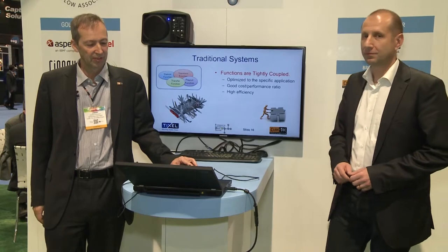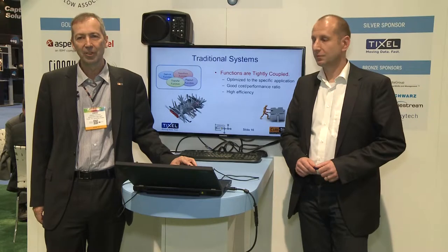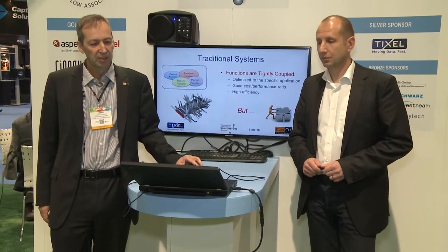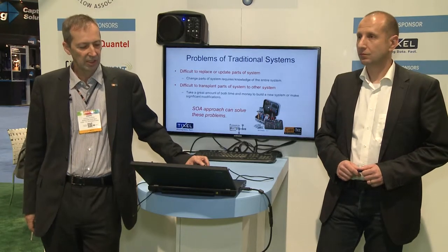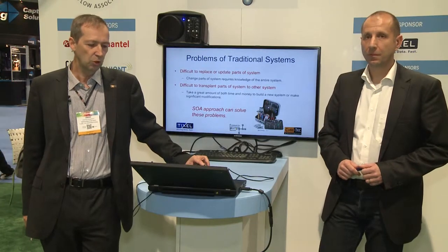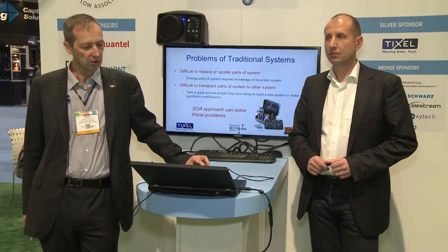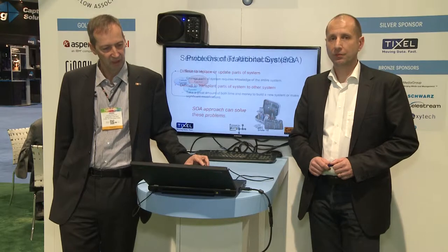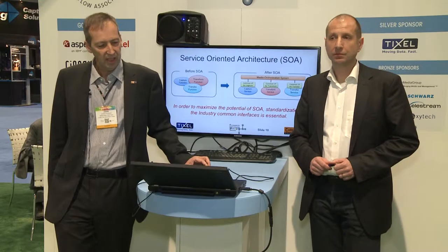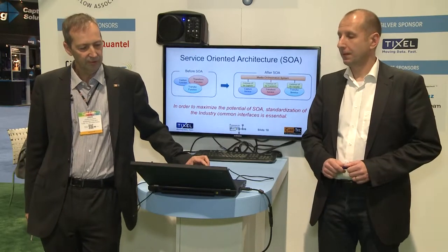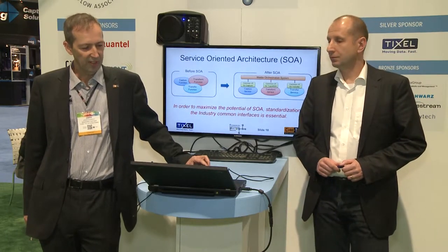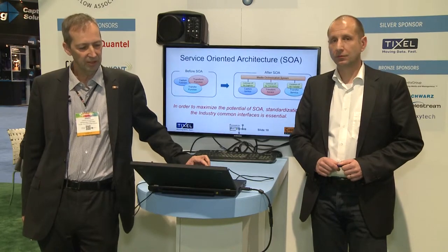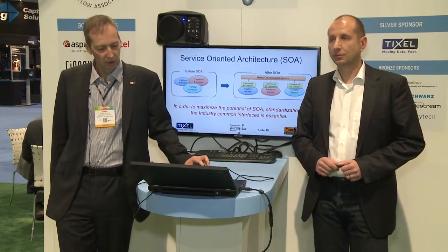Traditional systems are tightly coupled, so if you want to change one component, that influences all components in the whole system. To address that, you replace single parts and change to a service-oriented architecture. A service-oriented architecture is more like a toolbox instead of a coupled tool, so you are more flexible and your services are more easily exchangeable. You get from tightly coupled systems to a service bus where you have a clearly defined interface — only one interface to the service bus — and that helps you structure and keep your services independent from what your other services do.